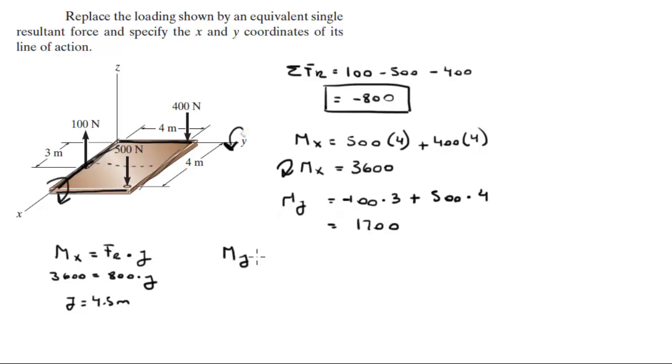Now the same thing goes for the y. The moment in the y is equal to the resultant force times its coordinate in the x, because to create a moment in the y you've got to find the distance where it'll be acting in the x. So the moment in the y, 1700, equals 800 times x.